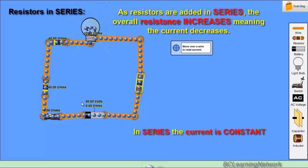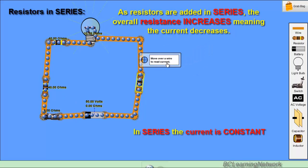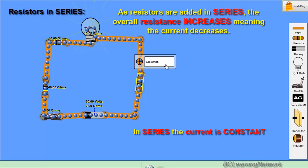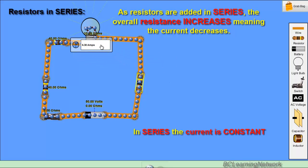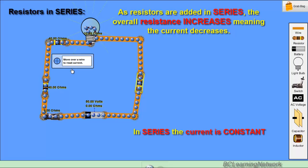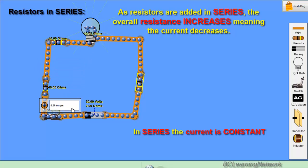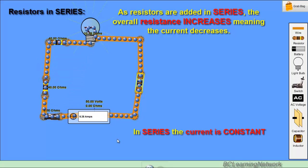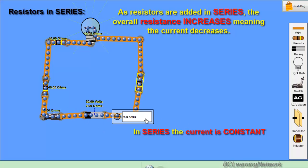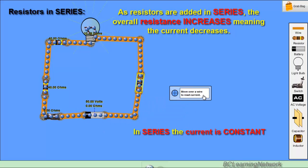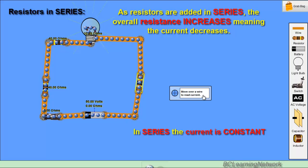Now before it was 0.55 amps. With this additional resistance, it's now dropped to 0.38 amps. And once again, that 0.38 amps is the same no matter where I am in that circuit. The traffic flow is consistent throughout. So to summarize, as we add resistors in series, the overall resistance increases, meaning the overall current decreases.